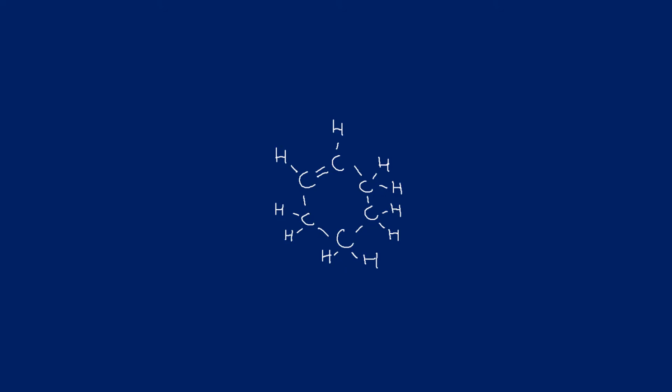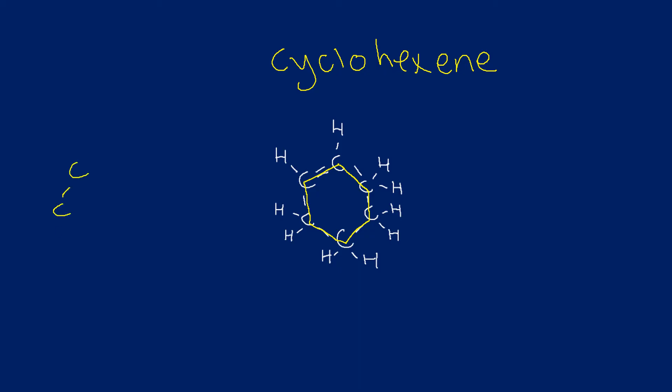Next we have a cyclic structure. Counting the carbons: 1, 2, 3, 4, 5, 6 — six carbons in a ring. So this is cyclohexene: 'cyclo' because it's cyclic, 'hex' because there are six carbons, and '-ene' because there's a double bond. This might be beyond the BTEC specification, but it's better to be over-prepared than under-prepared. We don't need to number the position of the double bond in the ring, because rotating it around gives the same molecule.